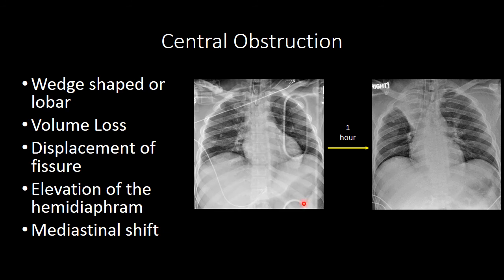Central obstruction can also cause atelectasis, and that central obstruction can be due to a number of causes. We certainly see it with a mass in one of the bronchi or the airway, or a classic squamous cell carcinoma that has invaded the bronchi. But we can also see it with mucus plugging related to intubation or increased secretions. This is an intubated patient who, over the course of one hour, develops this opacity.